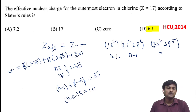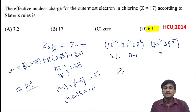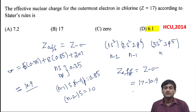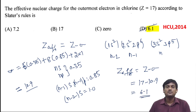So finally, sigma equals approximately 10.9. Then Z_eff equals Z minus sigma, which is 17 minus 10.9, giving us 6.1. So the correct answer is 6.1.